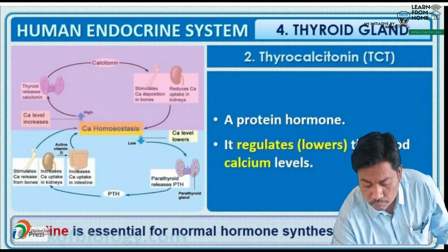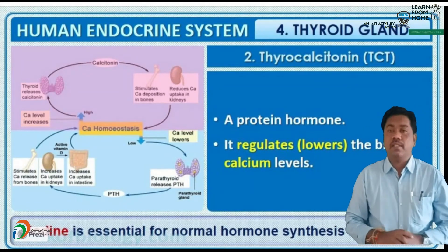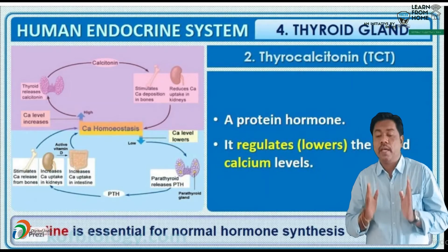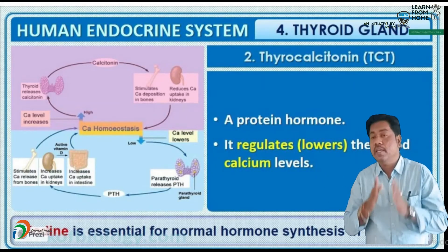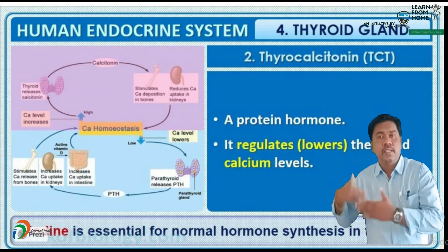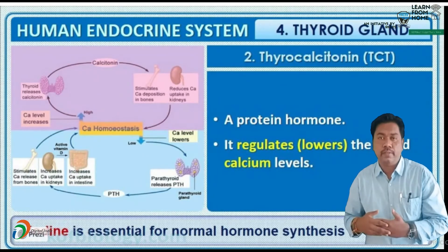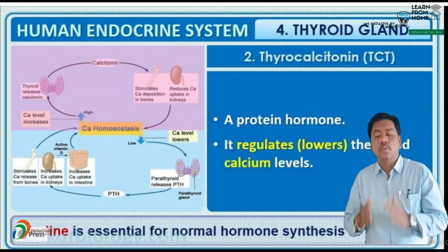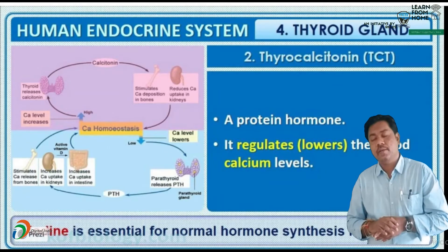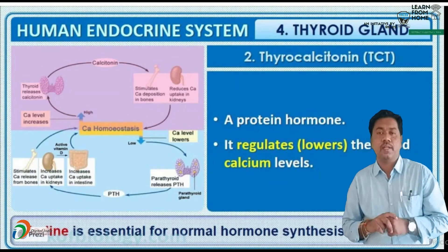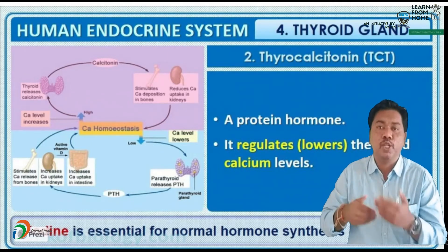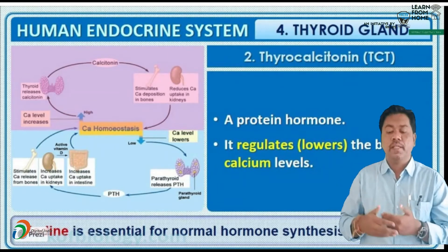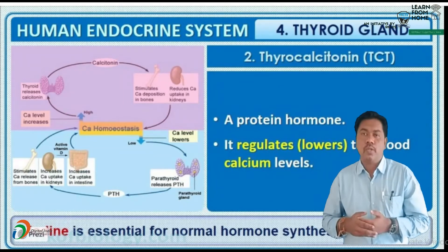Now, the function of TCT (thyrocalcitonin): it is a protein hormone that regulates the blood calcium level. The calcium level in our blood is maintained by the influence of thyrocalcitonin hormone. Due to a low level of calcium in the blood, it leads to a disease known as tetany. Wild contractions occur in the skeletal muscles — this is tetany.